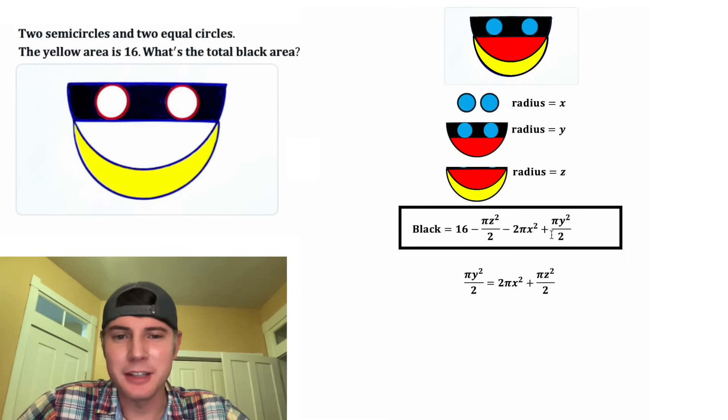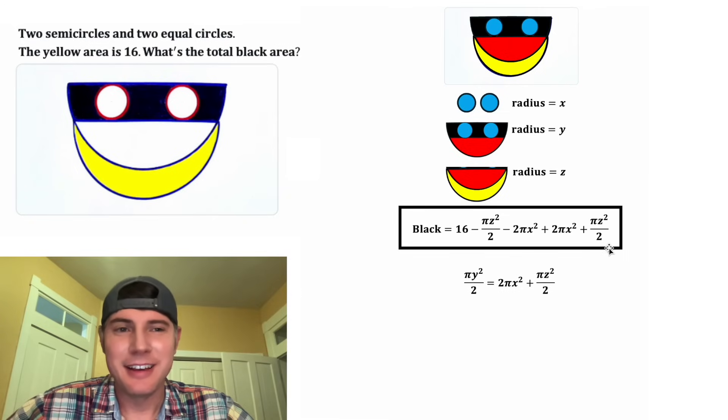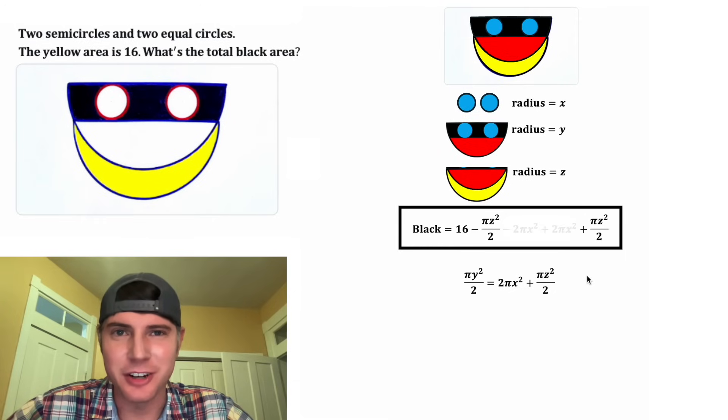Let's give ourselves some room, and in the place of this, we'll plug in this. And now for the fun part. We have a negative 2 pi X squared and a positive 2 pi X squared. Those can cancel each other out. And then we also have a negative pi Z squared over 2 and a positive pi Z squared over 2.